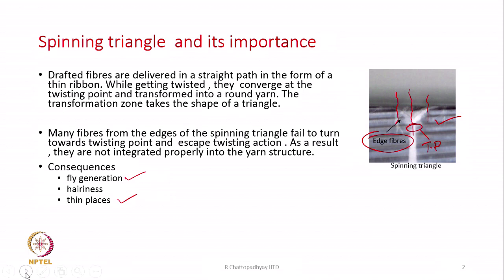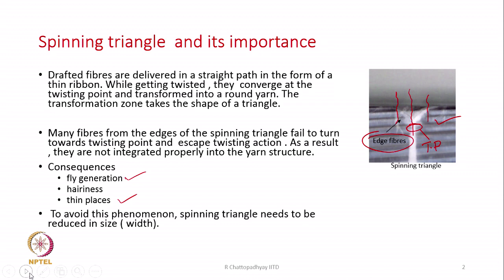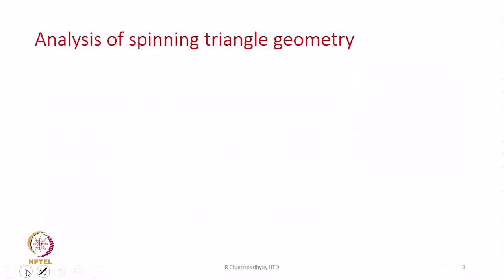It means the quality of the yarn is deteriorating. To avoid this phenomenon we need to suppress the spinning triangle. We have to reduce the size of the spinning triangle — especially the width of the triangle. The solution is to suppress the spinning triangle in size, and mostly it is the width part that matters.